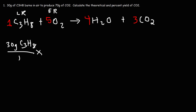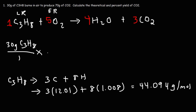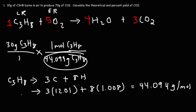To convert grams to moles, we use the molar mass from the periodic table. Propane consists of three carbon atoms and eight hydrogen atoms. The atomic weight of carbon is 12.01 and for hydrogen it's 1.008. So the molar mass of C3H8 is 44.094 grams per mole, meaning one mole of propane has a mass of 44.094 grams. We set this up so that the unit grams of propane cancels.